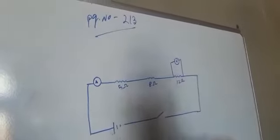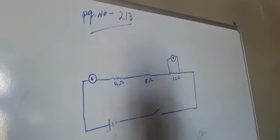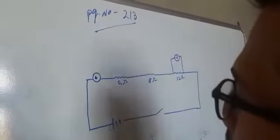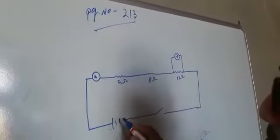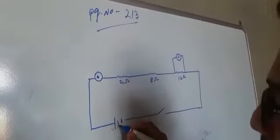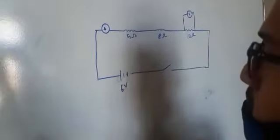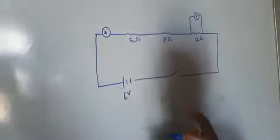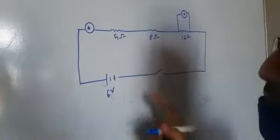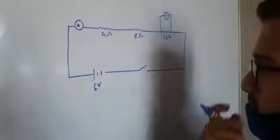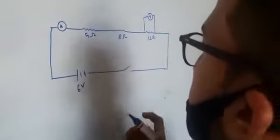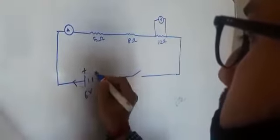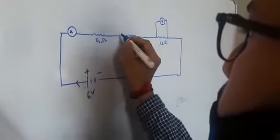This is the ammeter and this is the voltmeter. The potential difference of the cell is 6 volts, because there are two cells with a potential difference of 2 volts each. Current flows from this point to this point.